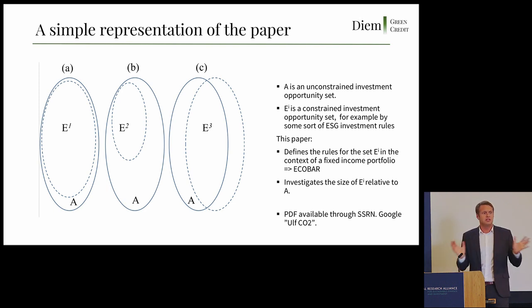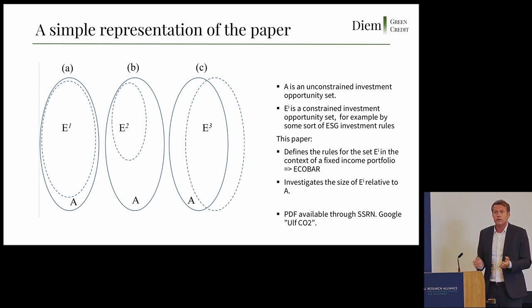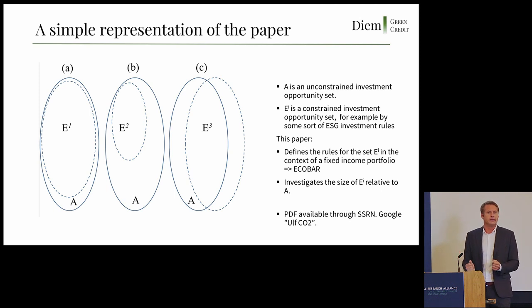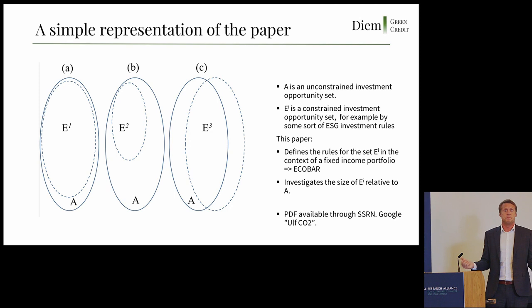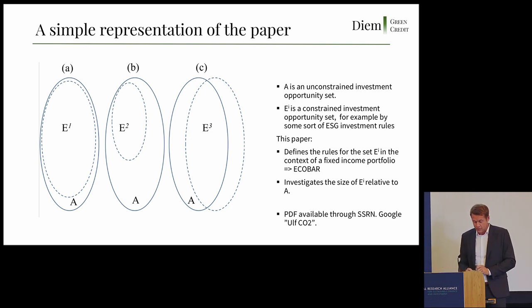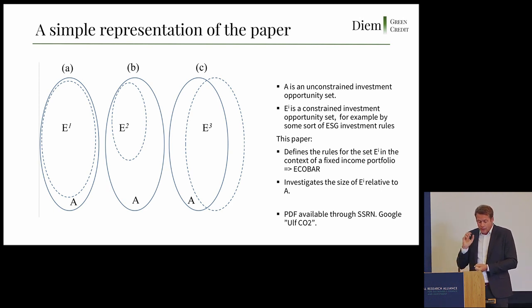Whenever we apply ESG constraints we actually reduce the opportunity set of where the portfolio manager can invest. The question becomes: are we in case A or case B? In case A, the constrained investment set is almost as big as the unconstrained, meaning the portfolio manager can generate the returns they want with very little friction. In case B it's quite different — they can only trade parts of the market. The paper tries to define whether the investment set E is E1 or E2, and then measures the difference between the unconstrained and constrained opportunity sets.